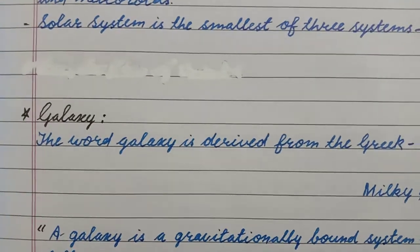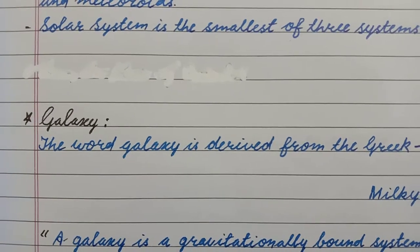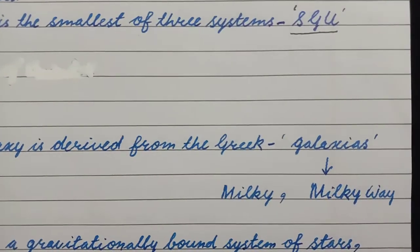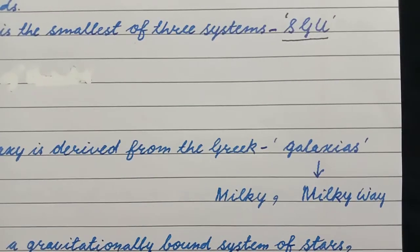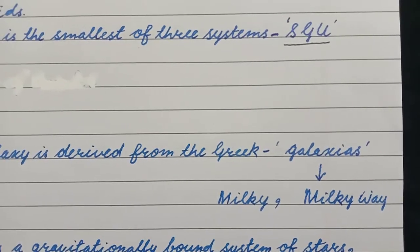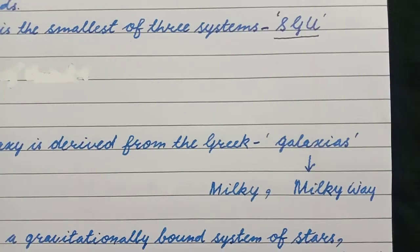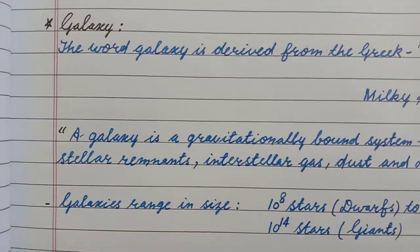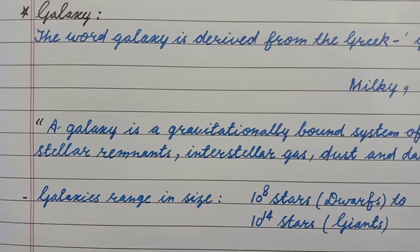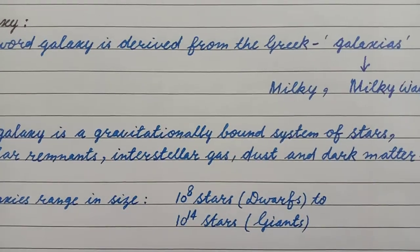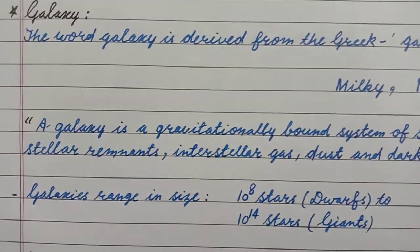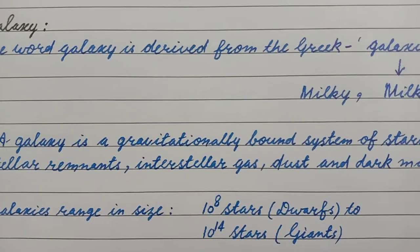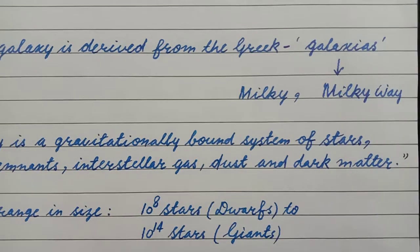Galaxy. The word galaxy is derived from the Greek word Galaxias, and the meaning of Galaxias is Milky or Milky Way. A galaxy is a gravitationally bound system of stars, stellar remnants, interstellar gas, dust and dark matter.